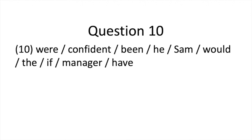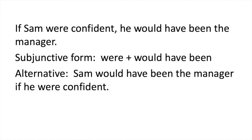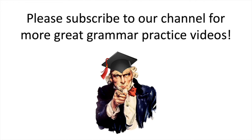Finally, we'll have a look at question ten. The answer is: If Sam were confident, he would have been the manager. Alternatively, we could structure the sentence: Sam would have been the manager if he were confident. We know that we need to use the subjunctive form here because of the word were in question ten, and also because of the words would have been. That is the end of the subjunctive examples with subjunctive mood exercises in English grammar video. Thanks so much for joining us, and please remember to subscribe to our channel for more great grammar practice videos.